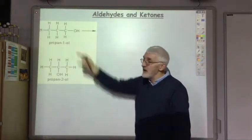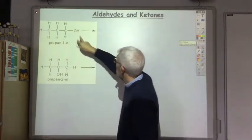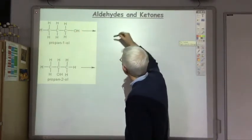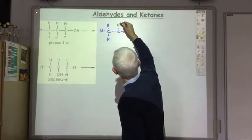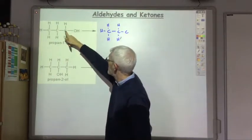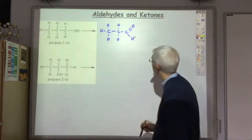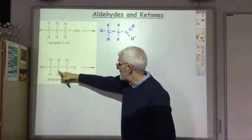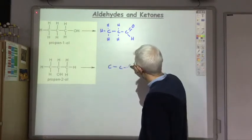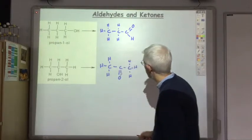Here's propan-1-ol, a primary alcohol. When added to acidified dichromate solution, the carbon bearing the OH group loses that OH group and gains a carbon-to-oxygen double bond — this is an aldehyde. For propan-2-ol, a secondary alcohol, the same carbon undergoes the change: it loses the OH and forms a C=O double bond — this is a ketone.